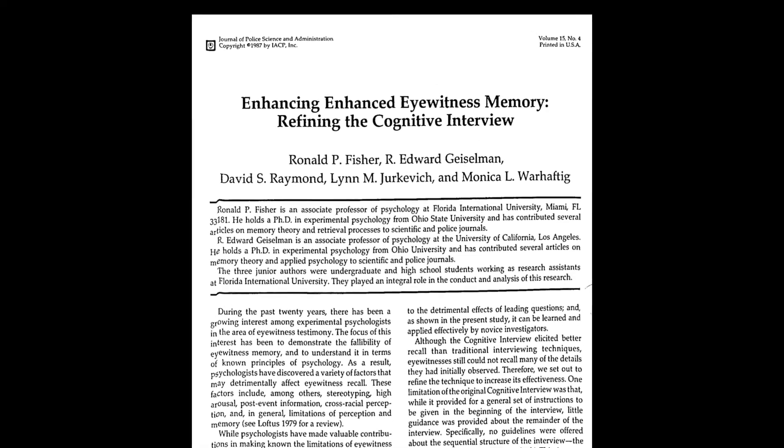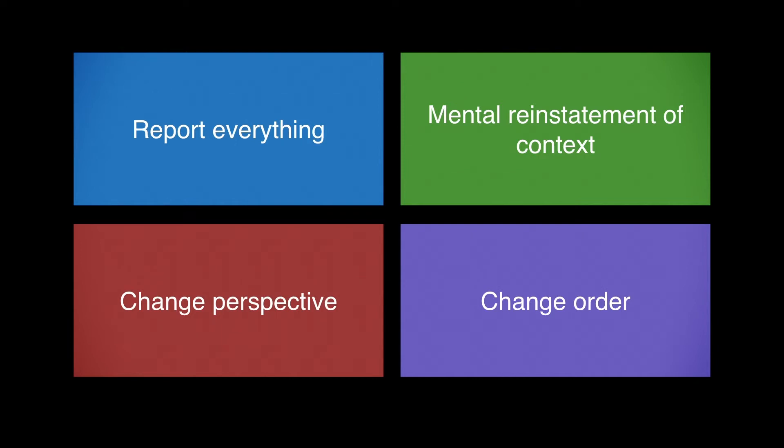In the first empirical investigation of the efficacy of the enhanced cognitive interview, Fisher and colleagues in 1987 compared the original cognitive interview to the enhanced cognitive interview. Undergraduates were interviewed two days after watching Los Angeles Police Department training films, interviewed by officers using either the original or the enhanced cognitive interview. The original cognitive interview used four memory retrieval components: mental reinstatement of context, report everything, change temporal order, and change perspective. The enhanced cognitive interview additionally moved through the phases described, using witness-compatible questioning and focused retrieval techniques.